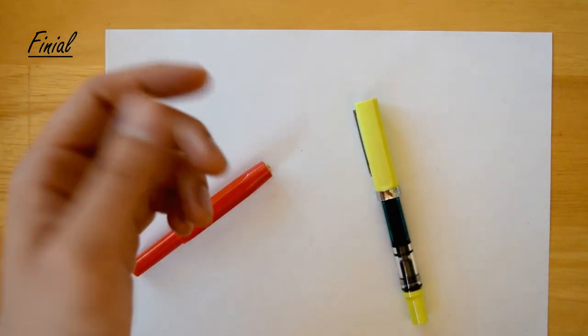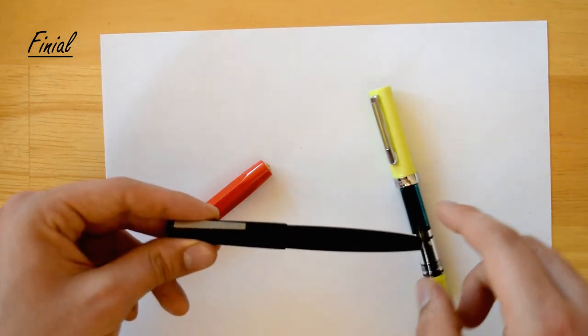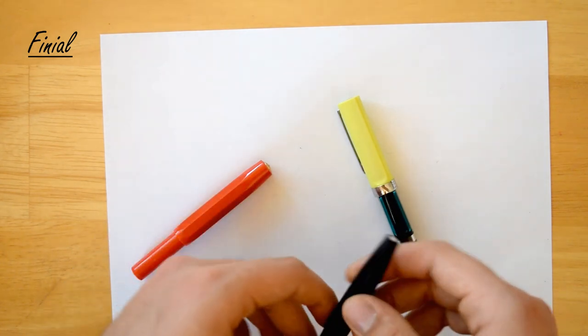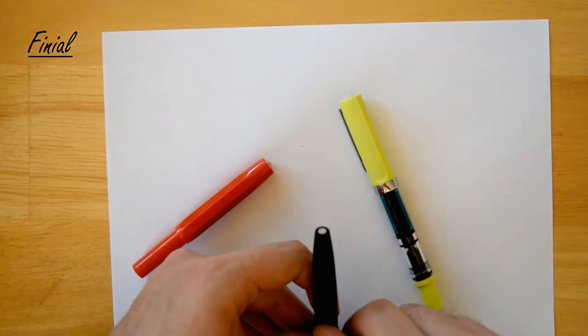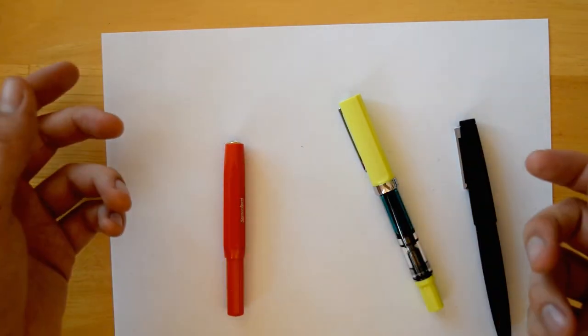On other pens it's the other way around. For example, on this Lamy 2000, the cap finial is actually pretty plain, but on the other side you have this small decoration. So the finials really refer to both ends of the fountain pen.